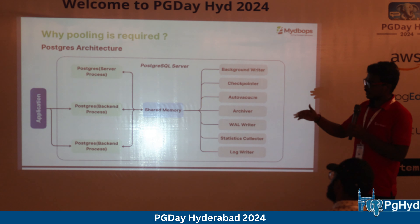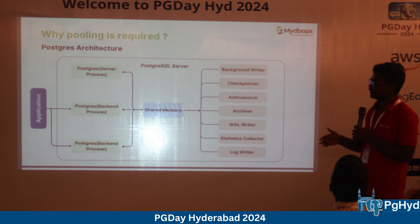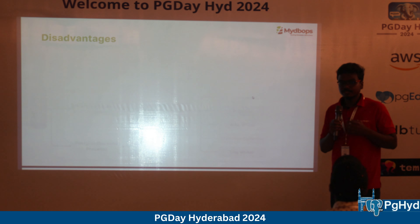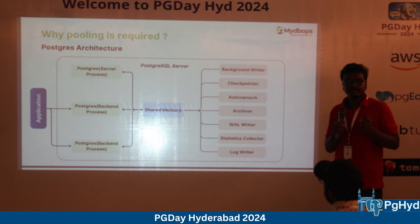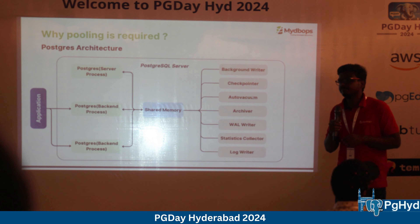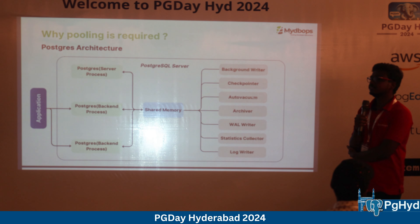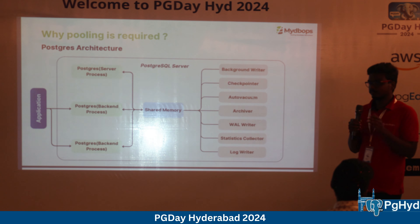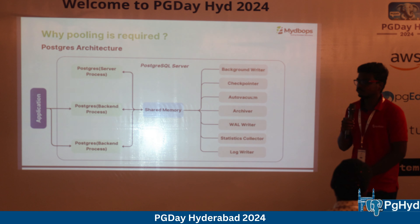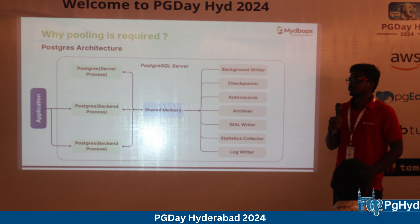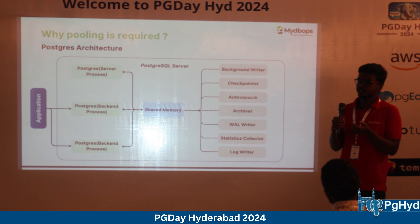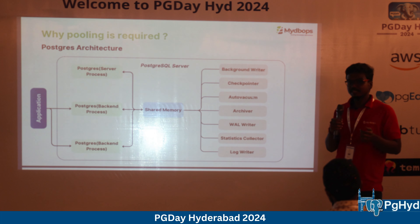Many customers who also handle MySQL ask why they need connection pooling only for PostgreSQL when they handle far more connections in MySQL. The answer lies in PostgreSQL's architecture. PostgreSQL is process-based, whereas MySQL is thread-based. For every connection, PostgreSQL creates a new process.